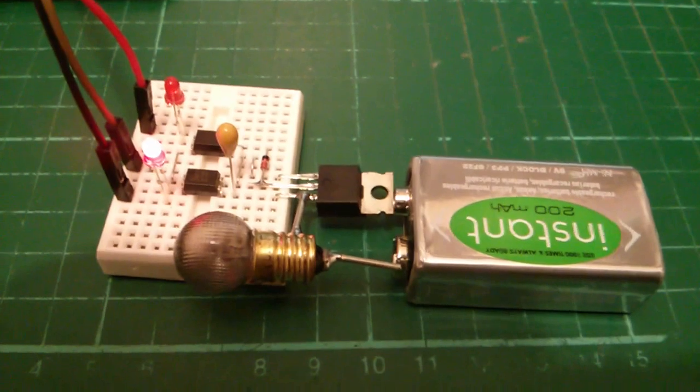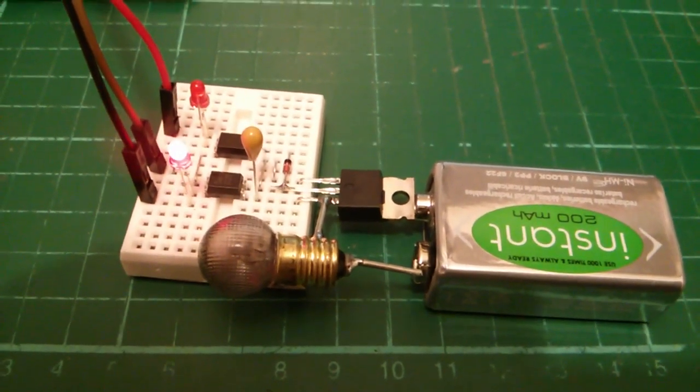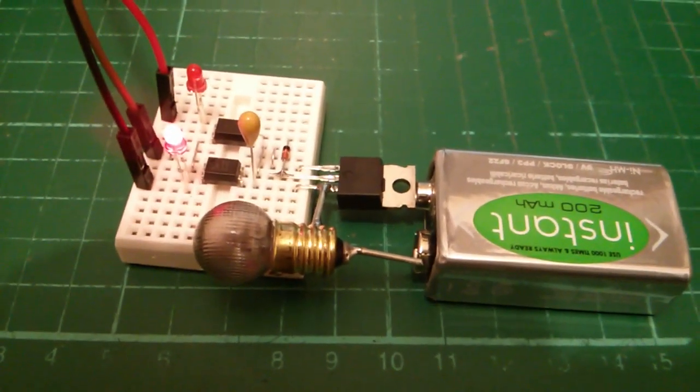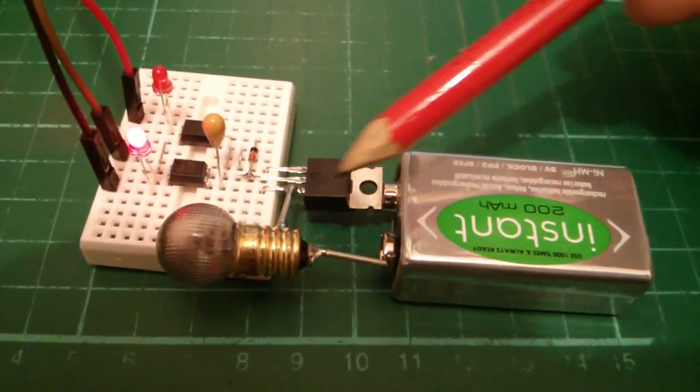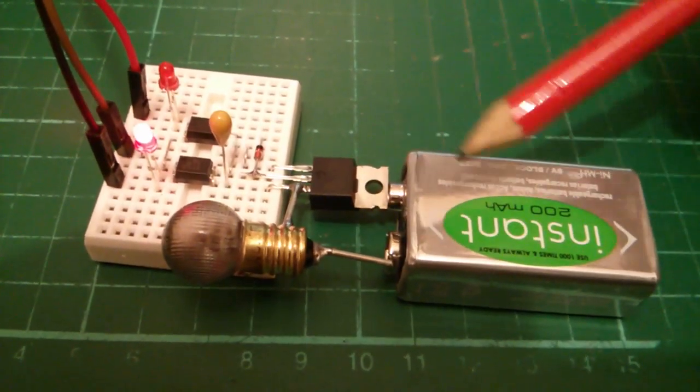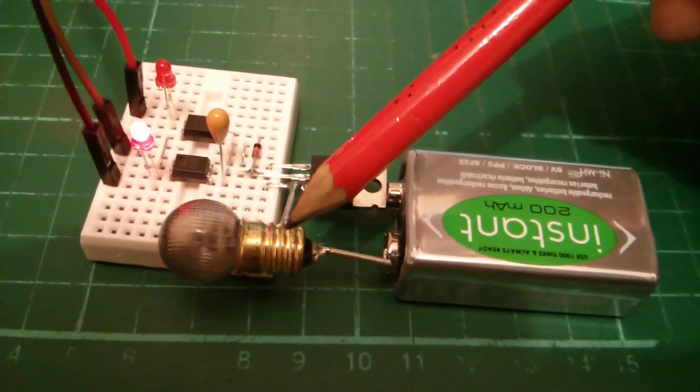I've just disconnected the battery because the flashing light is playing havoc with the camera. What we have here is a very tiny circuit, just this little loop: 9 volt battery, 6 volt bulb, and a MOSFET as the switch.